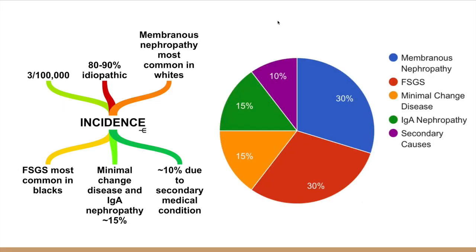Here you'll see the incidence and different causes of nephrotic syndrome. Most commonly it is caused by membranous nephropathy or FSGS, which is also called focal segmental glomerulosclerosis. In the African-American population FSGS is the most common. In the Caucasian population membranous nephropathy is the most common. It can also be minimal change disease, IgA nephropathy, and then 10% are thought to be due to secondary causes.